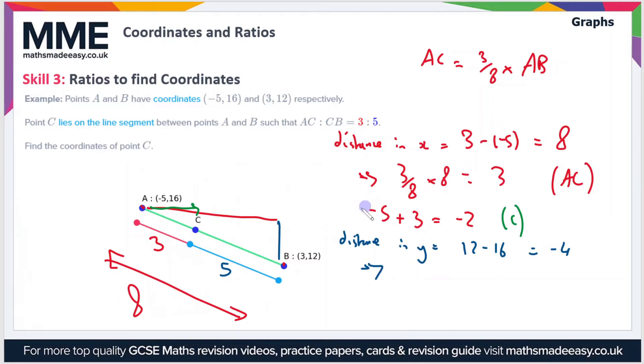To find the distance to C from A vertically, we calculate three-eighths times -4. Well, -4 divided by 8 is -1/2, times 3 is -3/2, or -3 divided by 2.